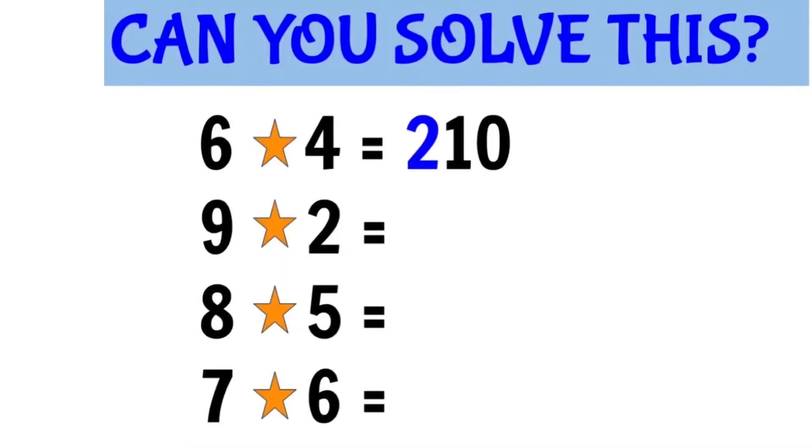In this example, 6 star 4, the 2 came from the difference of 6 and 4, and 10 comes from the sum of 6 plus 4.